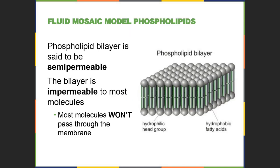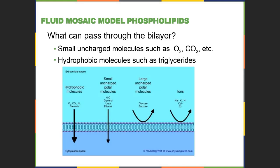The membrane will allow things that are hydrophobic, lipophilic, or non-polar to come in — things like steroids — or things that are small, like oxygen or carbon dioxide, or uncharged, like nitrogen. Things that are polar or charged will have a hard time coming in. Water can't come in unless it comes through a pore. Large molecules like glucose can't come through either. Ions will be sent away from the membrane unless they come through a pore.